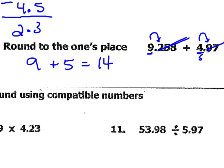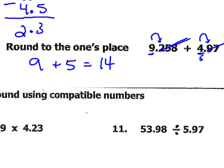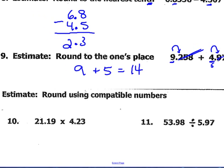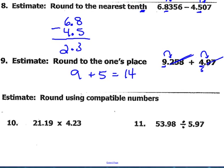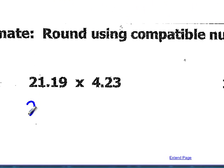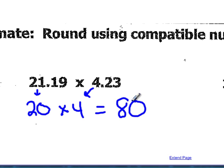Number 10 and 11 are estimate, round using compatible numbers. Well, compatible numbers are numbers that work well together, numbers you can use to calculate an answer in your head. So number 10, there's a couple of different solutions you can use. But when I look at this, I see 20 times 4. So I rounded the 21 down to 20, I rounded the 4.23 to 4, and I can do 20 times 4 in my head pretty easily.